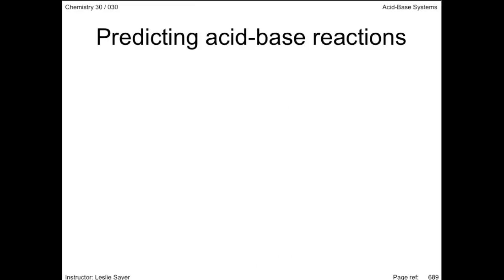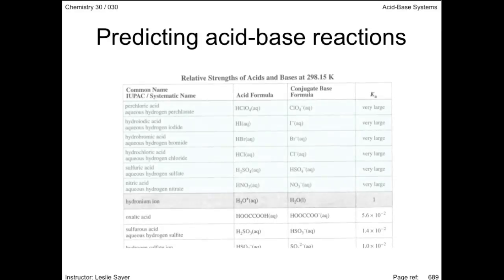Let's make some generalizations about the acid-base reactions that will enable us to predict whether reactants or products are favored. Looking at your acid-base table in your data booklet, the first six acids listed have very high equilibrium constants. For all intents and purposes, we can assume they ionize completely.